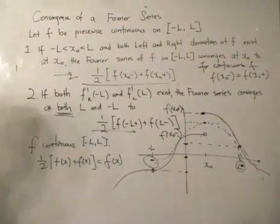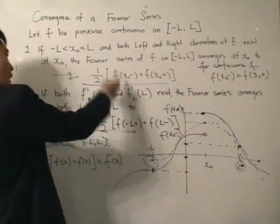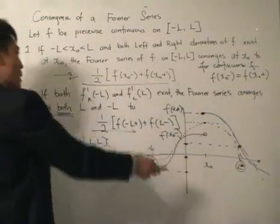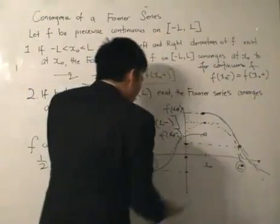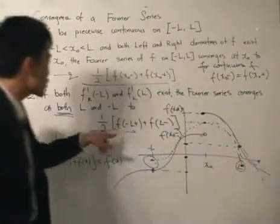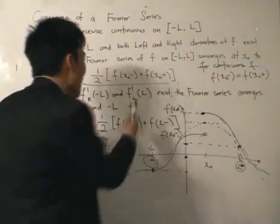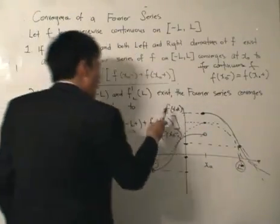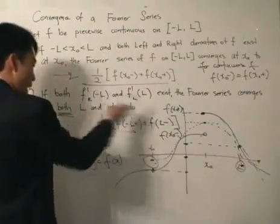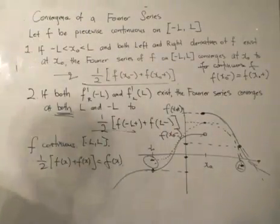At discontinuous points, take the left and right limits of that point and divide by 2. At the borders minus l to l, both converge to the average of the right-hand limit of minus l and the left-hand limit of l. And that's the convergence of the Fourier series.